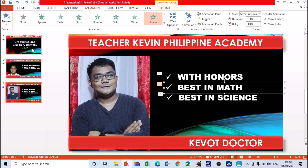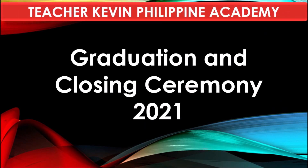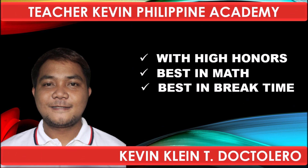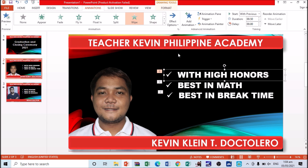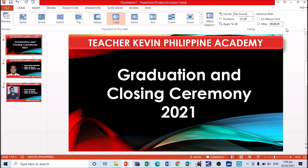We've now inserted animations and transitions in our slides. Let's play it and try to watch the presentation. There we go — it runs automatically after 6 seconds. You can also customize the delay for each animated text by clicking on it and adjusting the start, duration, and delay settings. Let's finalize the transition timing and apply to all.